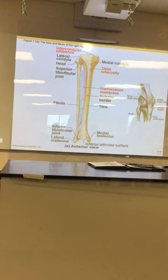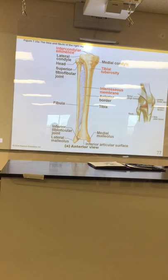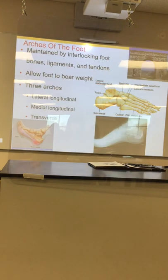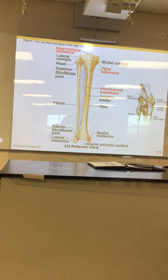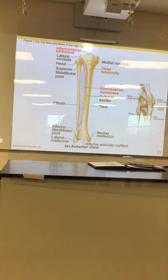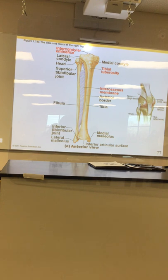Interosseous membranes — how important are those? You have interosseous membranes between the bones of your lower arm and lower leg. Your humerus is big and strong, and so is all of this. The two bones of the lower arm are smaller, but they have this interosseous membrane between them that links them together — kind of like wrapping your arm in an ace bandage. It gives another layer of protection.